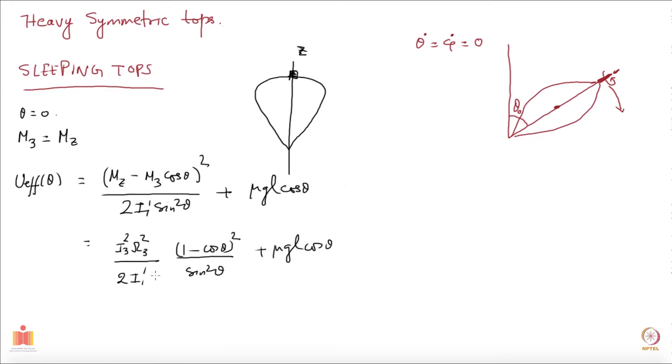I want to check whether I have an equilibrium position at theta equal to 0. So I will expand it around theta equal to 0. u effective theta for small theta would be i3² omega 3² over 2i1 prime.